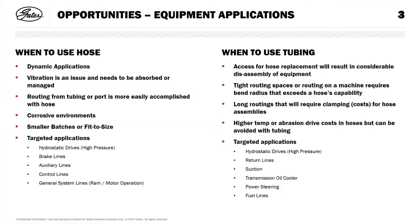Routing from a port or tube is easily accomplished with a tube. Corrosive environments and smaller batch sizes are much easier to make as a hose assembly than a tube assembly. When to use tubing: normally we use tubing where you have tight routing spaces and you can make the machine look a lot neater and tidier.